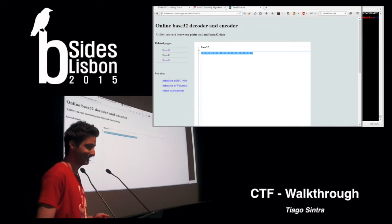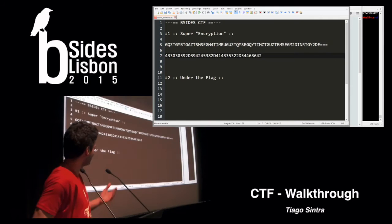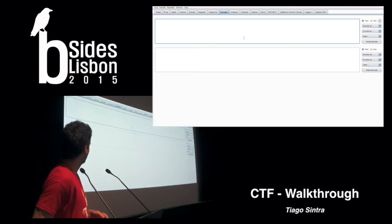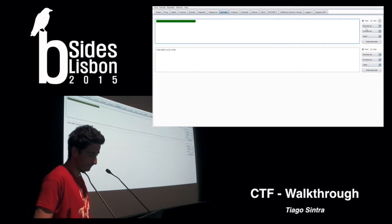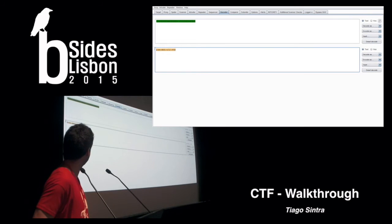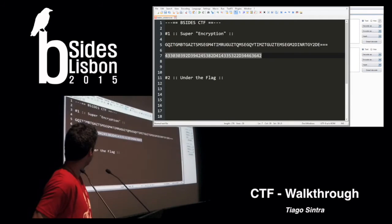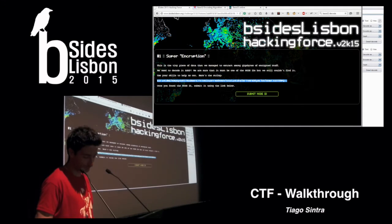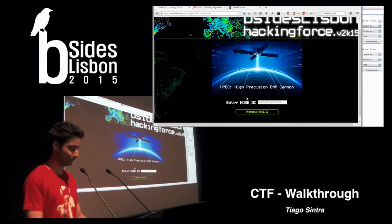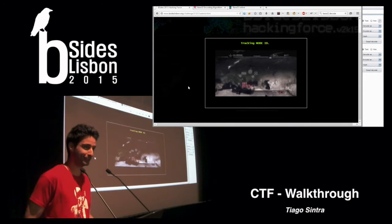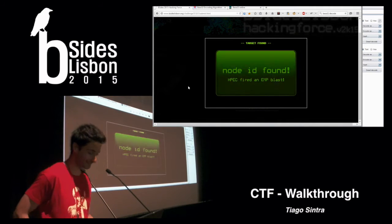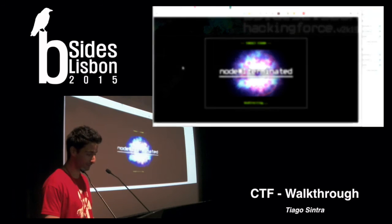I didn't want to make it too easy. So next we see that this is hexadecimal, and we see repetitions in the numbers. One could assume that this was just ASCII. So this was the first flag. I'm going to prove this is the correct flag — this is our HPEC, a precision EMP cannon that we are requesting our satellite to target and take out. That's it — this was the first challenge.